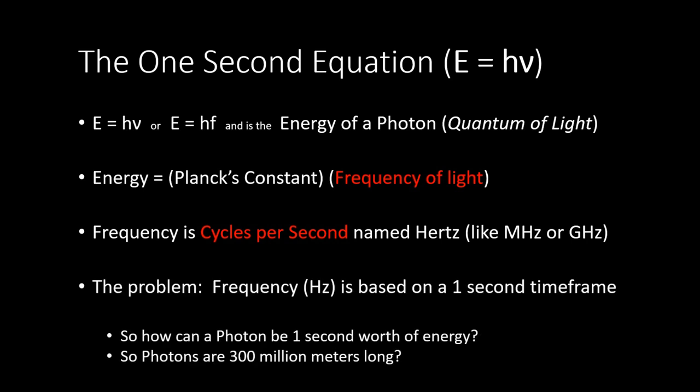At this point, you should be getting a sense that something doesn't seem right. If the energy of a photon is based on one second's worth of time, that seems weird. We can measure the speed of light at 300 million meters per second. So if the energy of a photon takes one second, then it's also 300 million meters long — basically the distance from the Earth to the Moon. That just doesn't seem right.